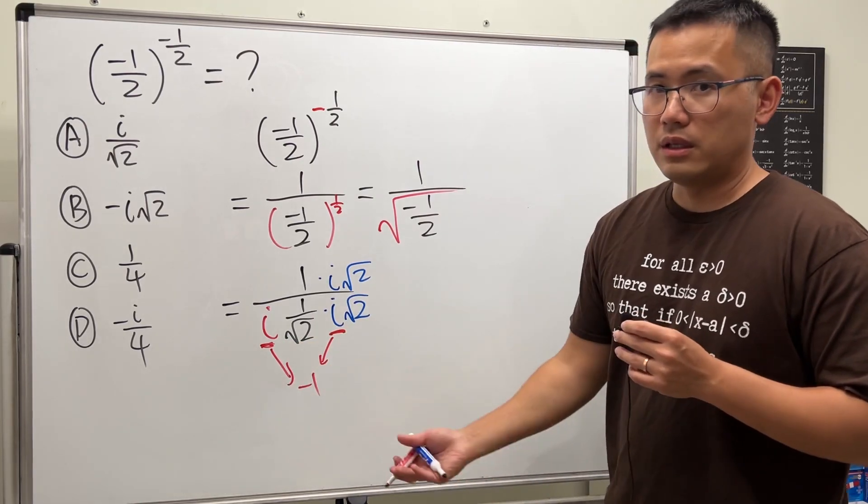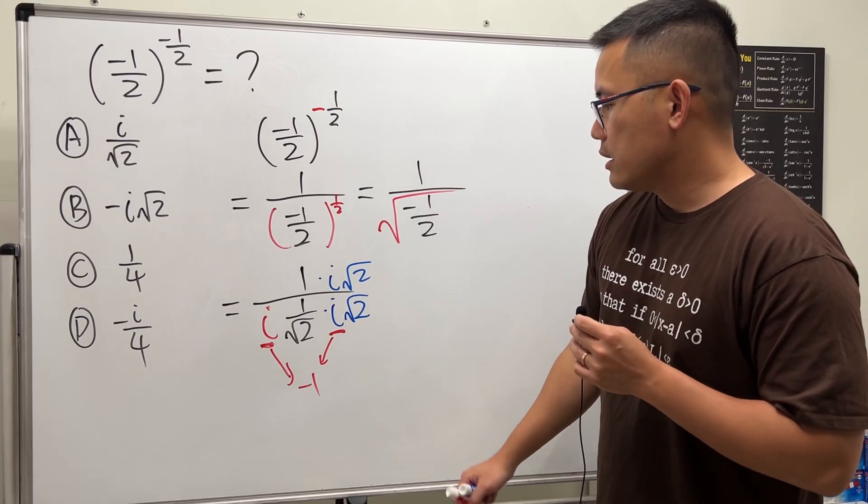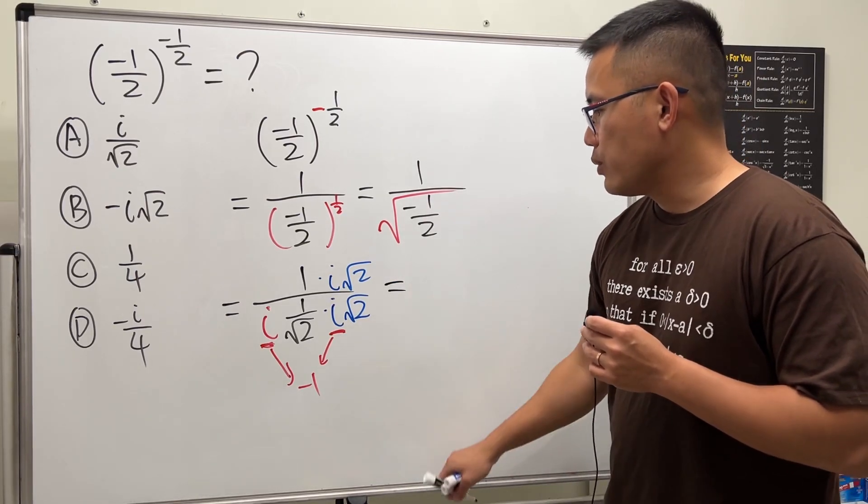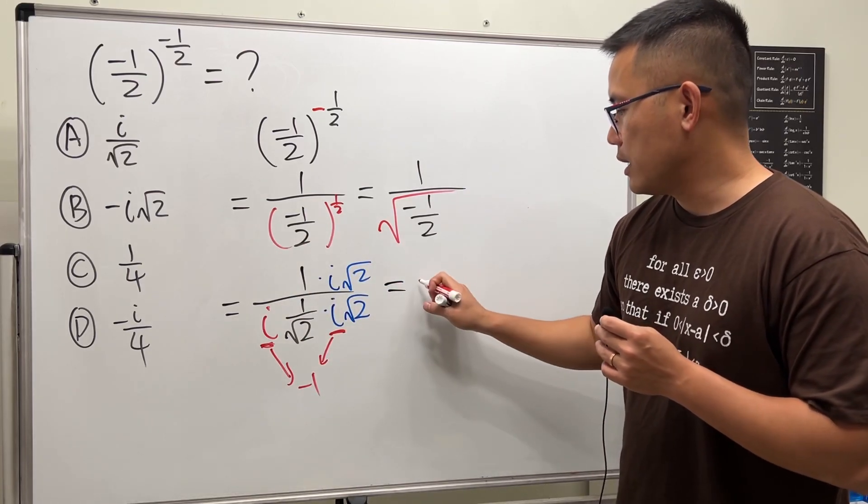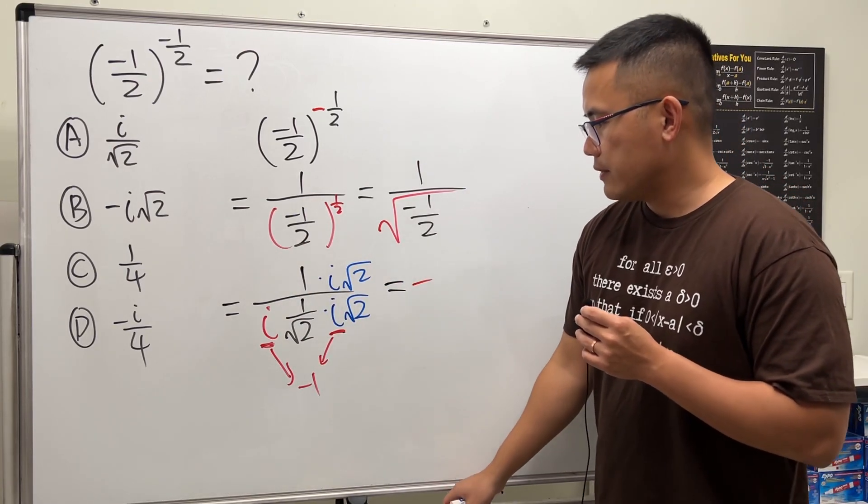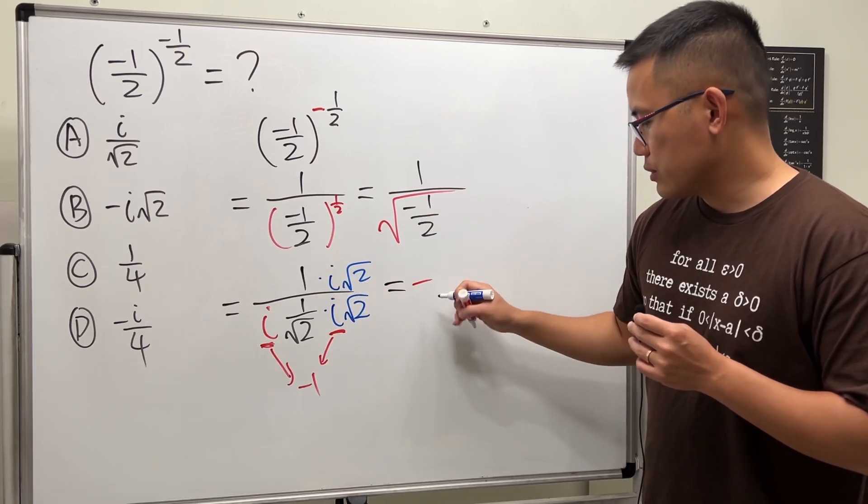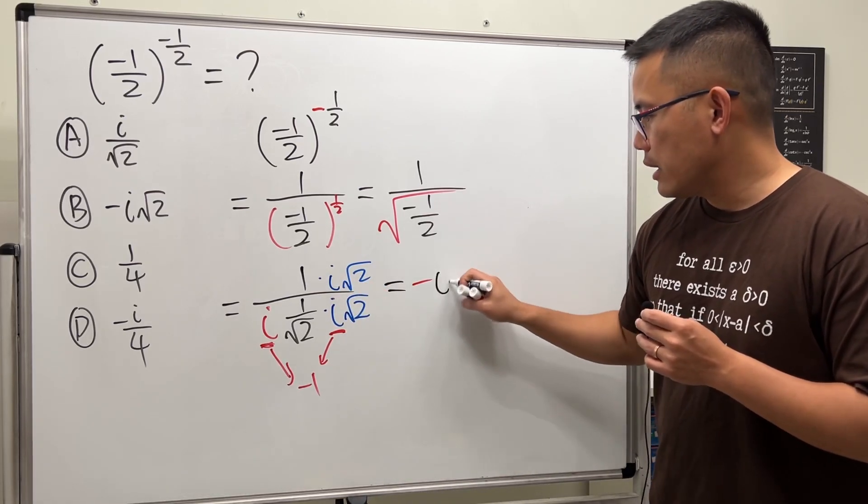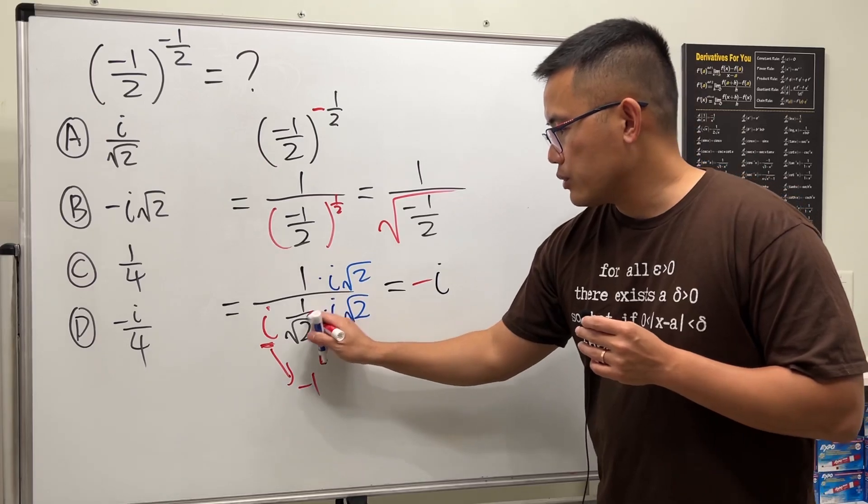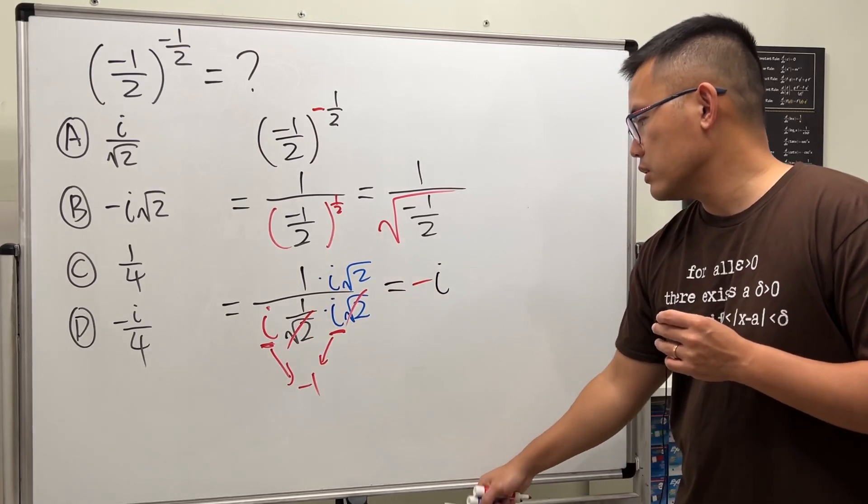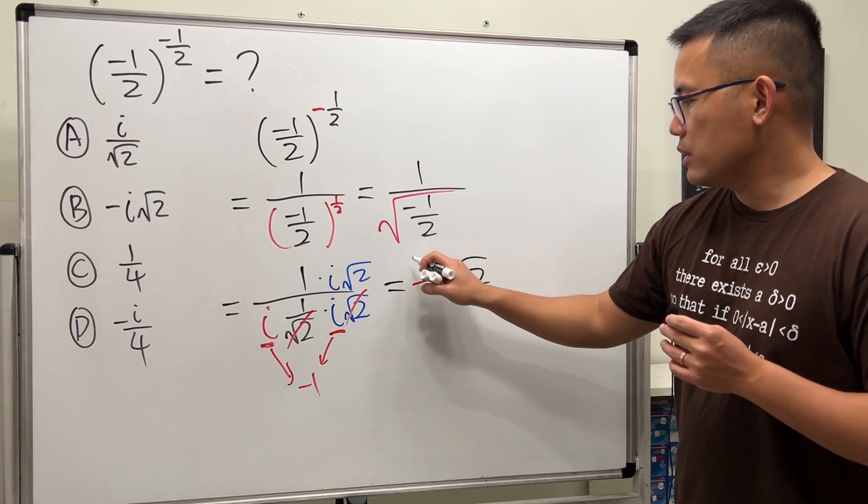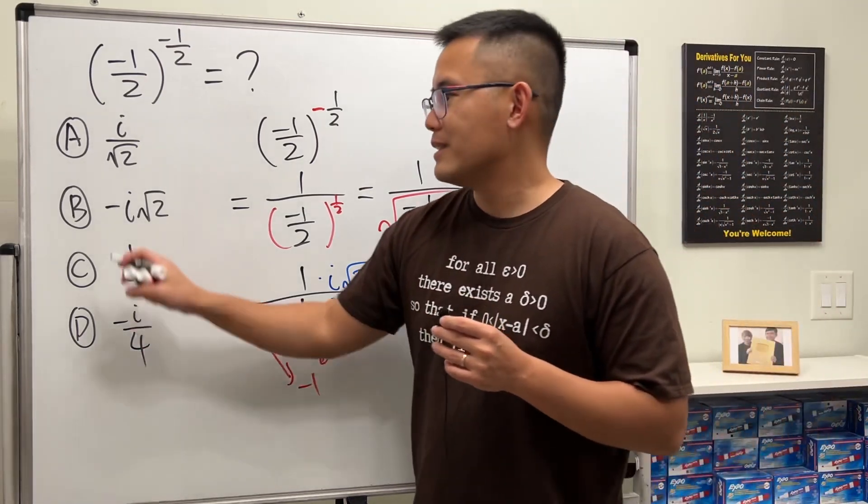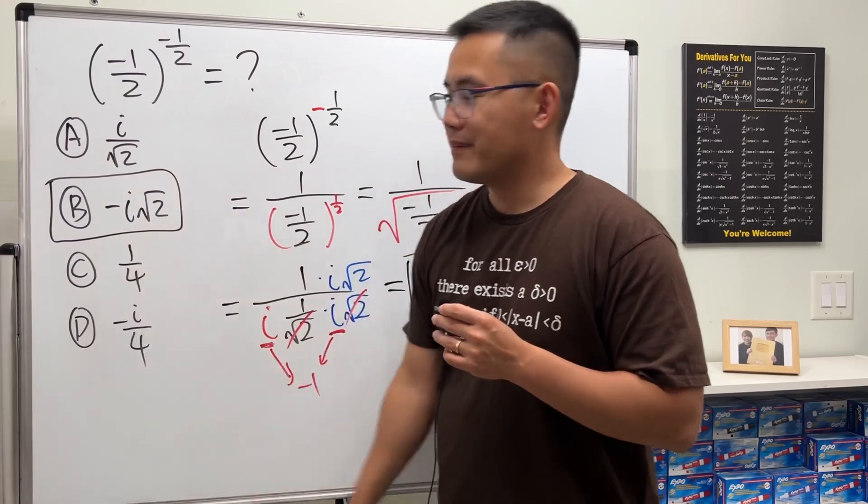All right, so let's write down the answer. This will be equal to—we have positive divided by negative, so that will be negative, and then we have the i right here, so let's write that down. Notice the square root of two times square root of two cancel, so we just have that square root of two right here. As you can see, the answer is B, and then we're done.